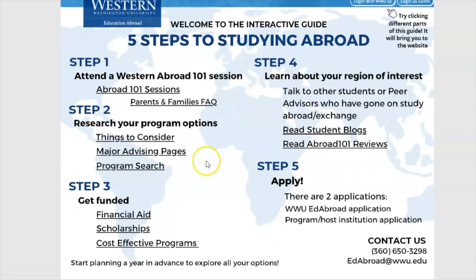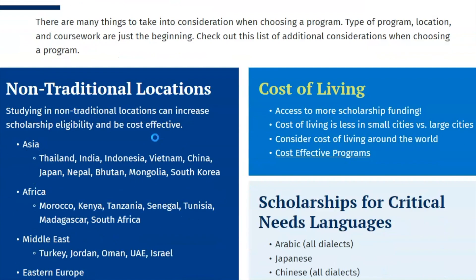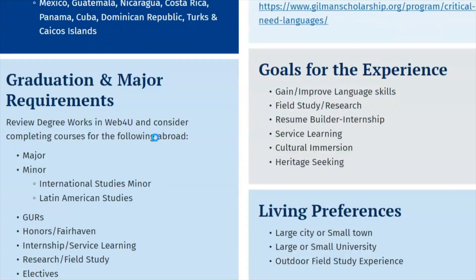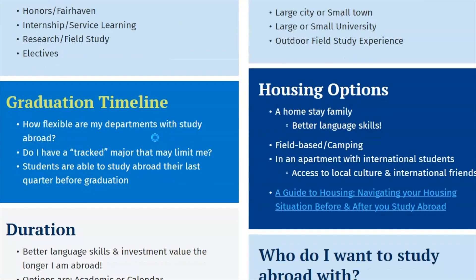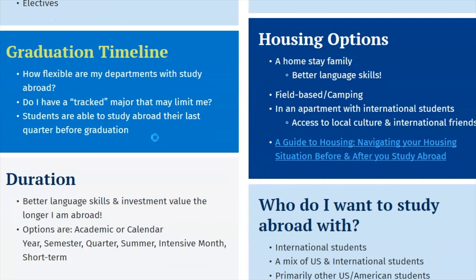Step 2 is to research your program options. It is important to look at the page 'Things to Consider' before you search for a program. Here, we have outlined various factors that go into deciding what program is best for you, such as your graduation timeline, different housing options, and terms to go abroad.